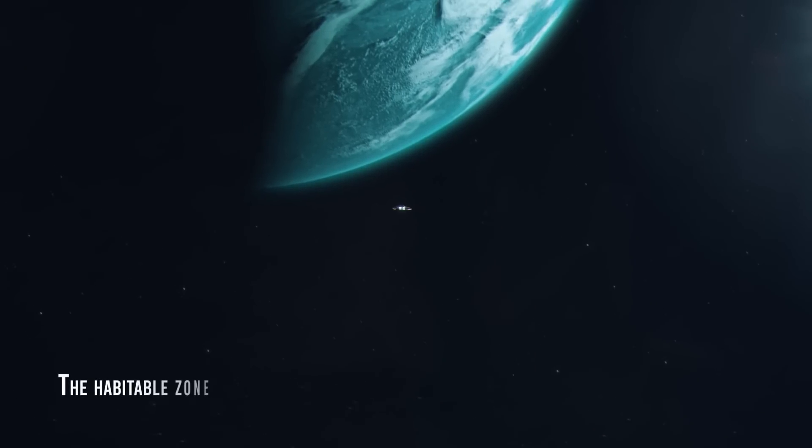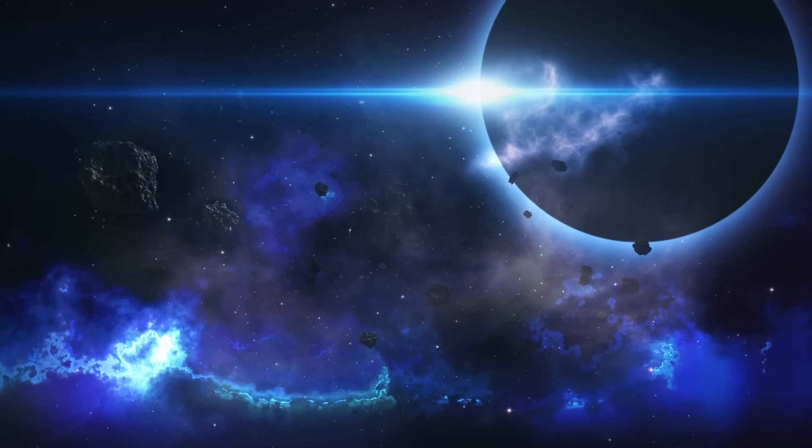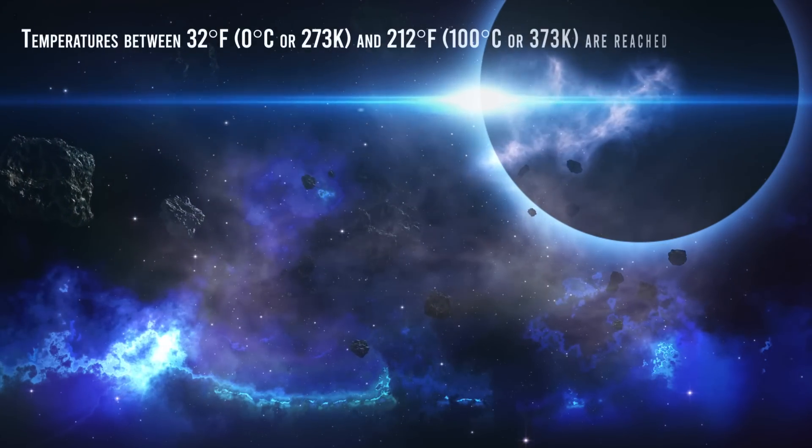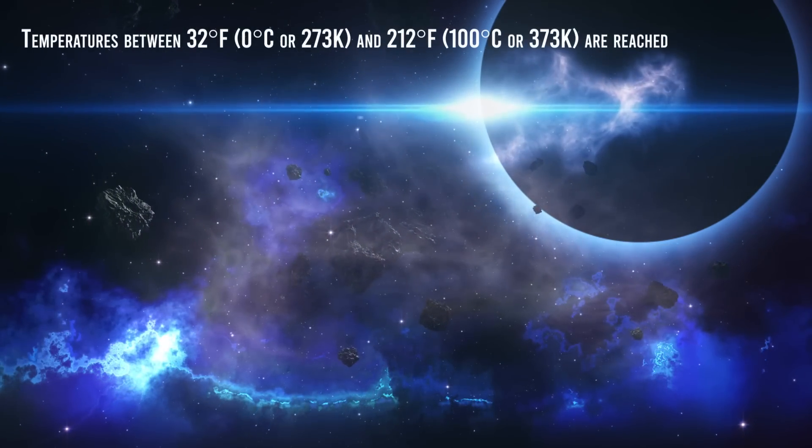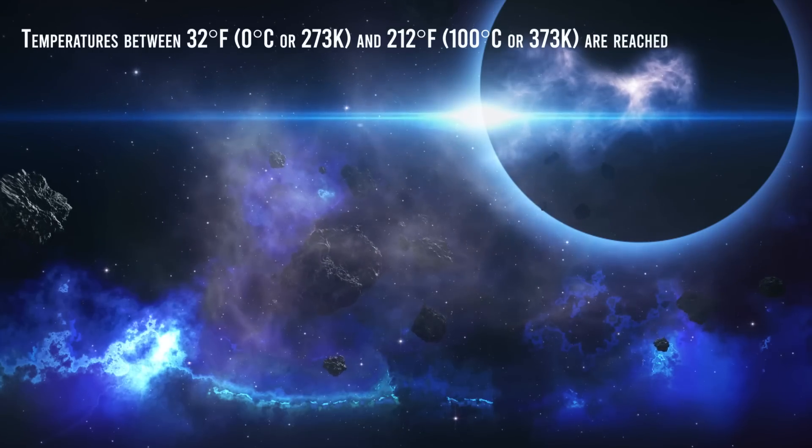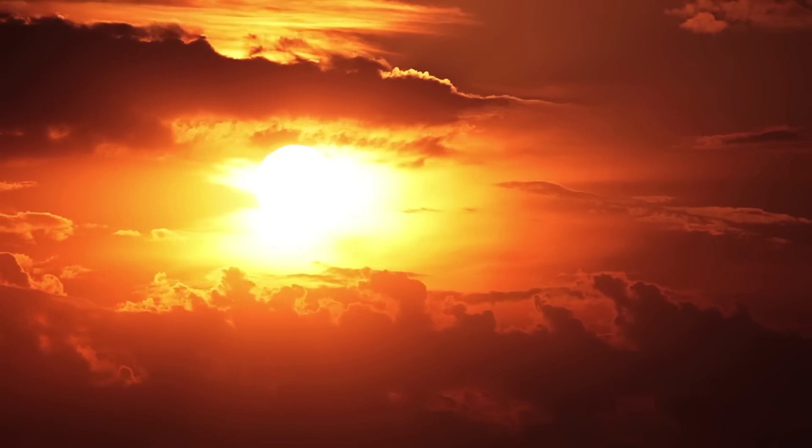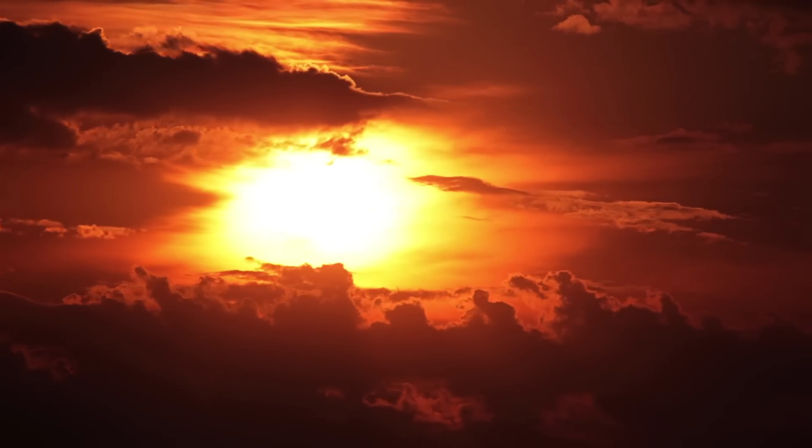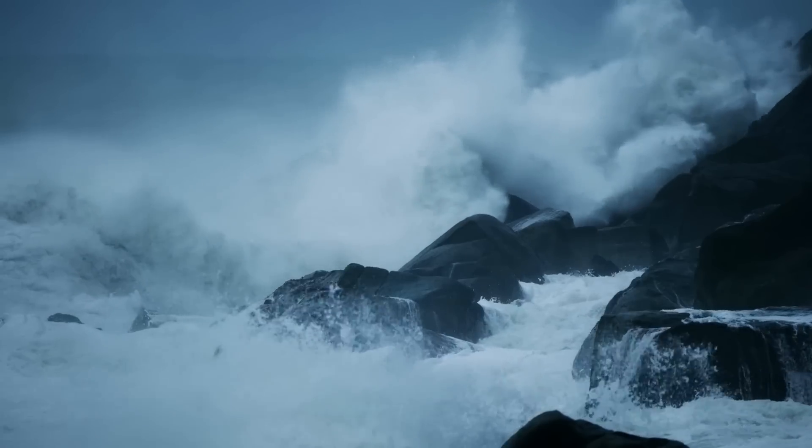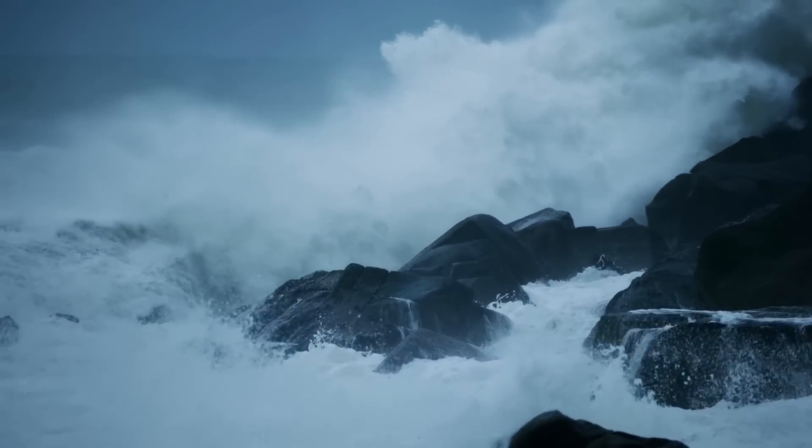The habitable zone is an area around a star within which temperatures between 32 degrees Fahrenheit and 212 degrees Fahrenheit are reached. That is, the habitable zone corresponds to the area around a star where the average temperature of the planets there would allow liquid water on its surface.